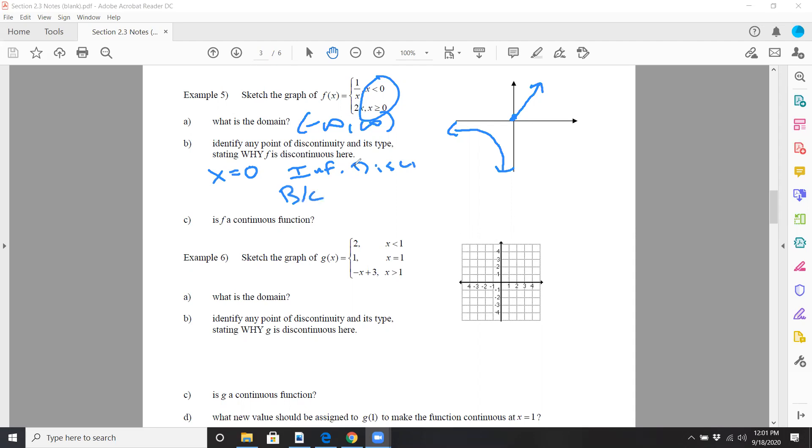Because f of c did exist, so we're okay there. Usually when f of c does not exist, that's typically going to be any kind of discontinuity, but f of c did exist.